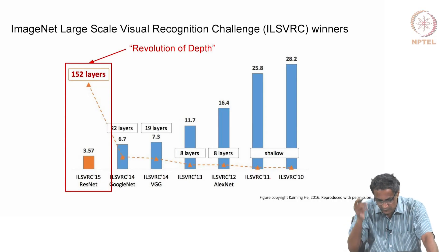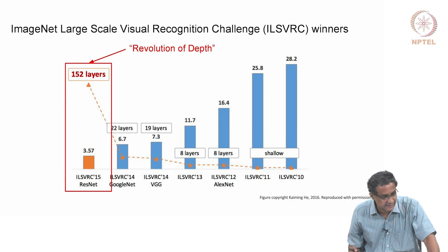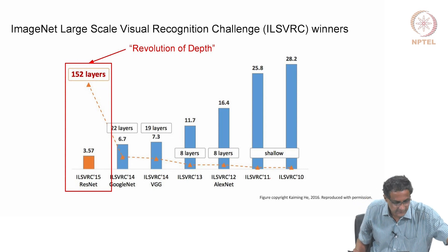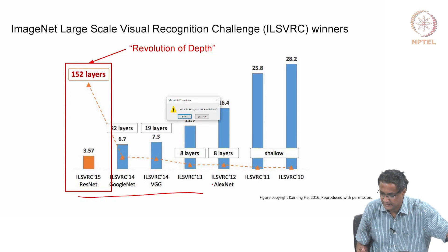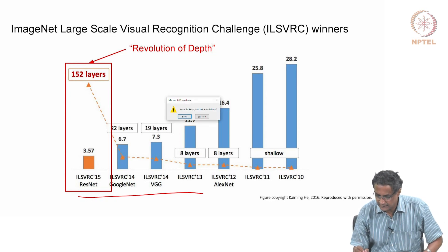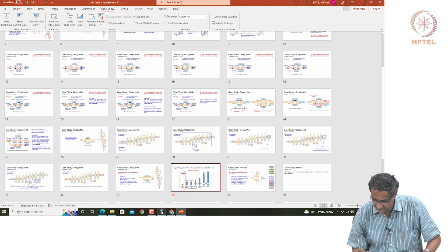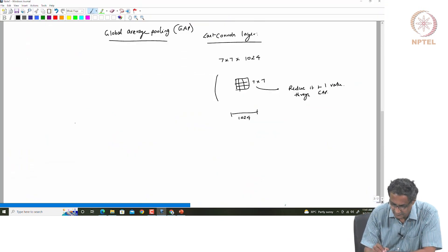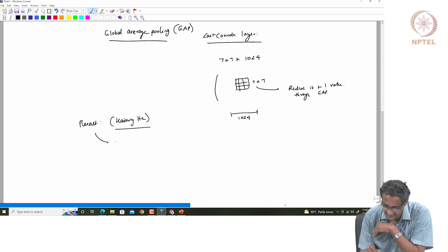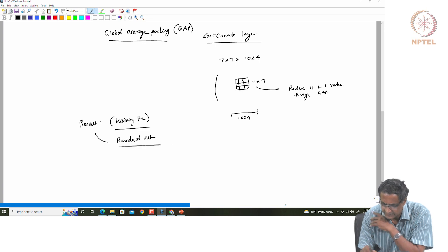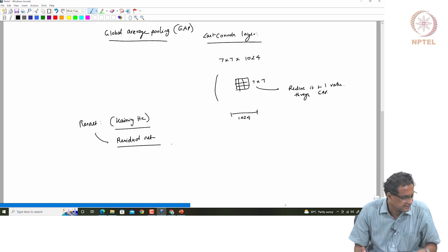The final one I wanted to talk about was ResNet. ResNet came in 2015, and you can see a lot of activity in that space of time. ResNet means a residual net. ResNet is actually an interesting idea.